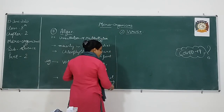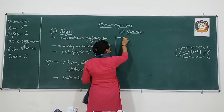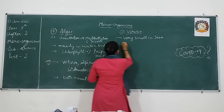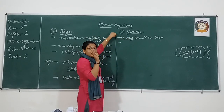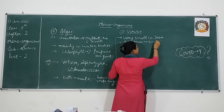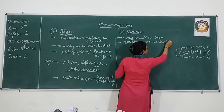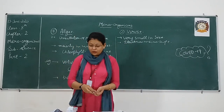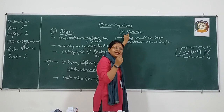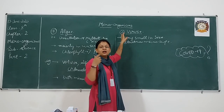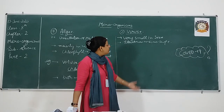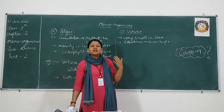Now the next topic is viruses. Viruses are very very small in size. They can be seen only with the help of an electron microscope. The rest of the microorganisms are visible with a simple microscope, but viruses are even smaller than all other microorganisms, so we need a special instrument — the electron microscope. This electron microscope is very powerful and only with its help are we able to see viruses.